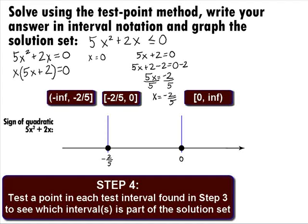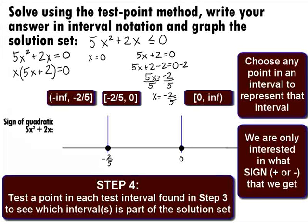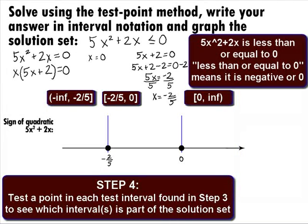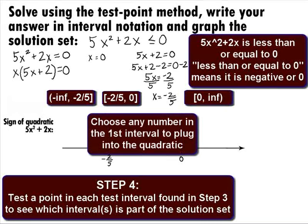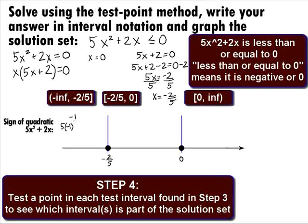In Step 4, we want to test a point in each test interval found in Step 3 to see which interval or intervals are part of the solution set. We can choose any point in an interval to represent that interval, then plug it into the quadratic in standard form to check its sign. The original inequality in standard form is 5x squared plus 2x is less than or equal to 0, meaning the quadratic has to be negative or equal to 0. Choosing negative 1 from the first interval, we get 5 times negative 1 squared plus 2 times negative 1, which simplifies to 5 minus 2, which equals 3. Since we got a positive number and we're looking for it to be negative, this interval is not part of the solution.